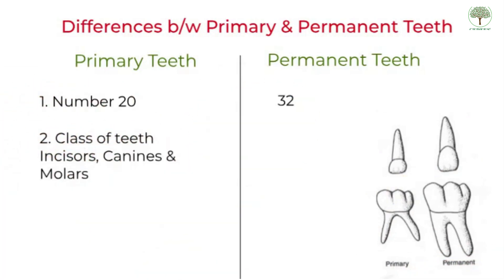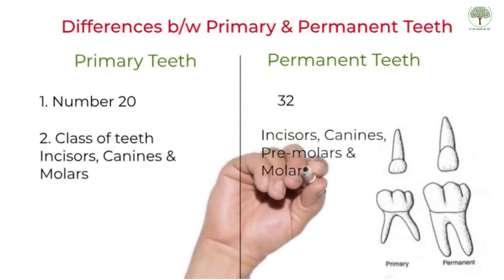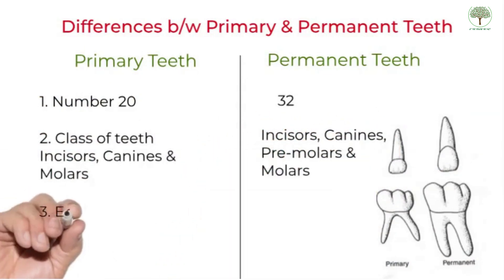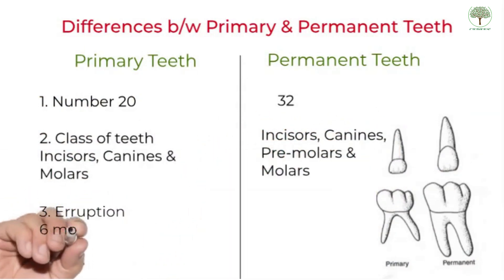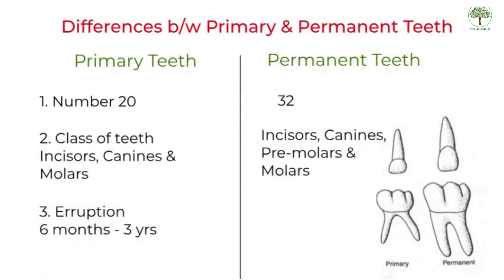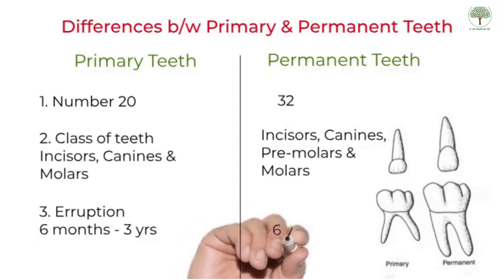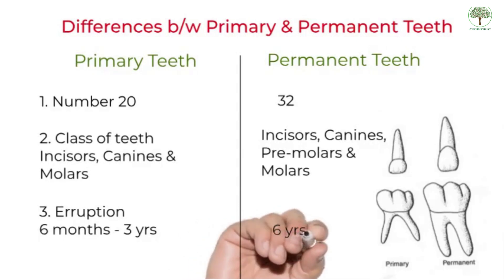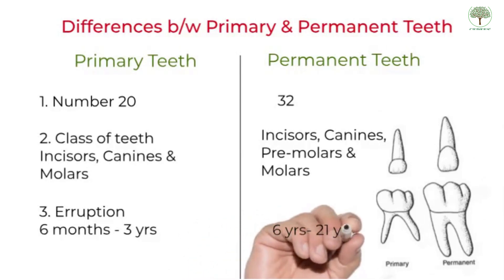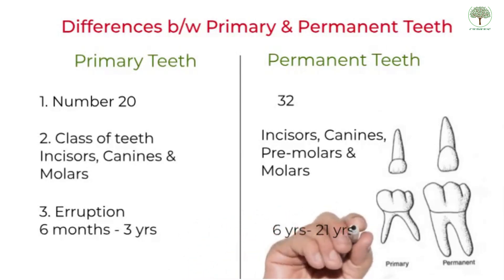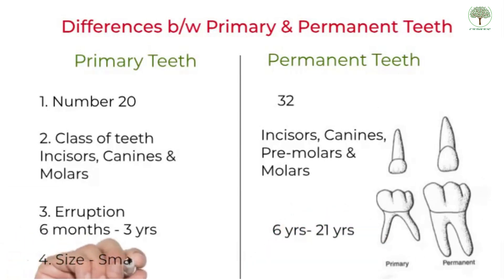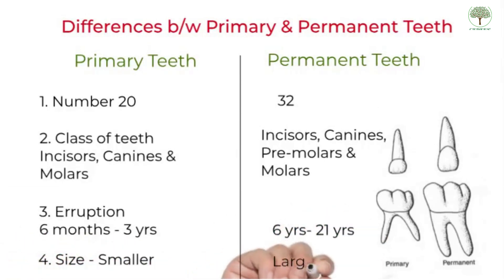Note there are no premolars in the primary set. The age of eruption for primary teeth is between 6 months to 3 years, with the first tooth to erupt being the mandibular central incisor. For the permanent teeth, the age of eruption is between 6 years to 21 years, and the mandibular first molar is the first tooth to erupt.